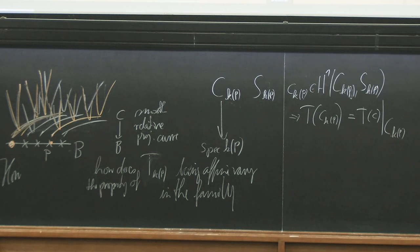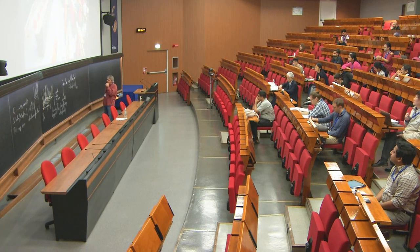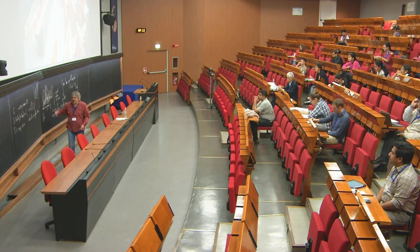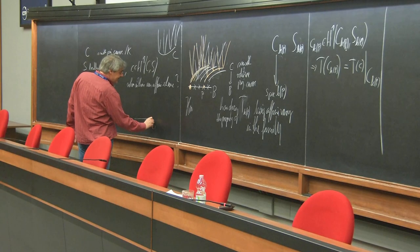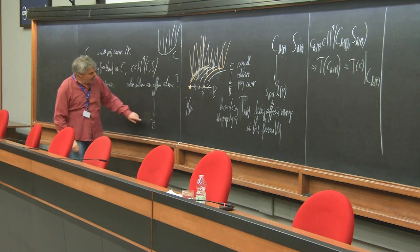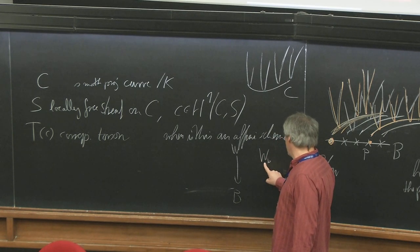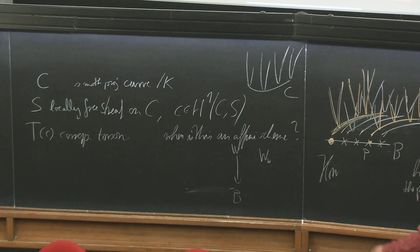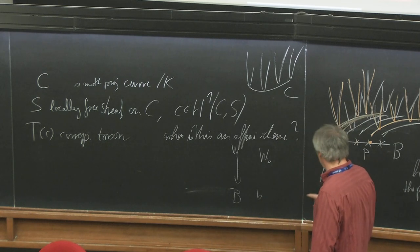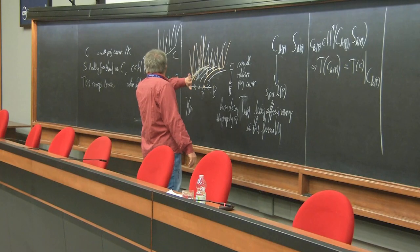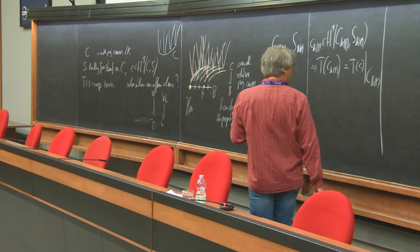If you prefer to work in commutative algebra, you can ask this question more generally: for any base scheme and any scheme W over it, how does the affineness of the fiber W_B vary in the family? Most phenomena which can occur at all can already be seen in the torsor case.